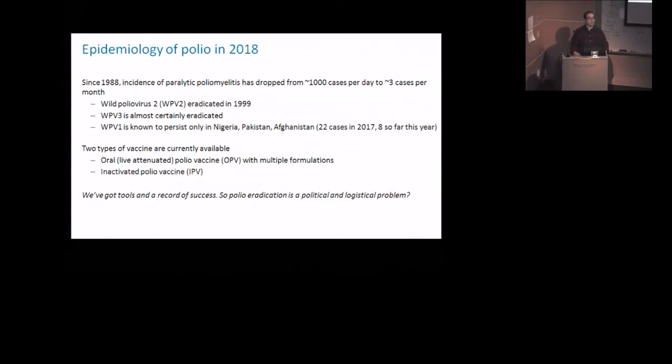So in 1988, there were about 1,000 cases of polio per day. That is mostly children waking up one morning and beginning to become paralyzed in a limb or worse. Through the eradication effort, which has been driven mainly by vaccination, that's down to about three cases per month.